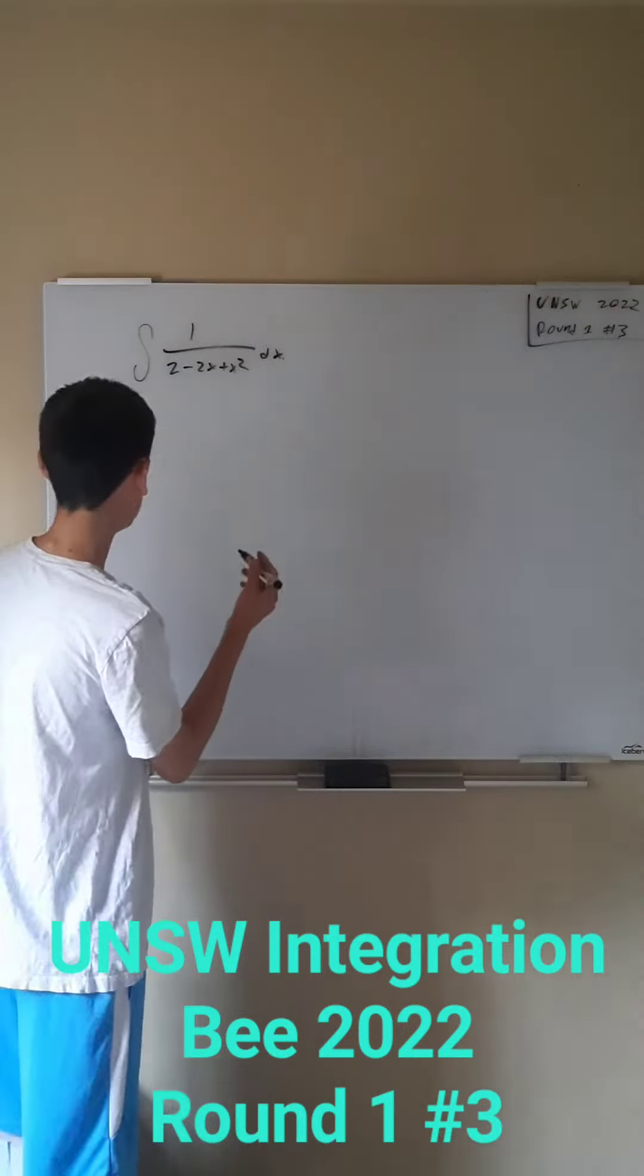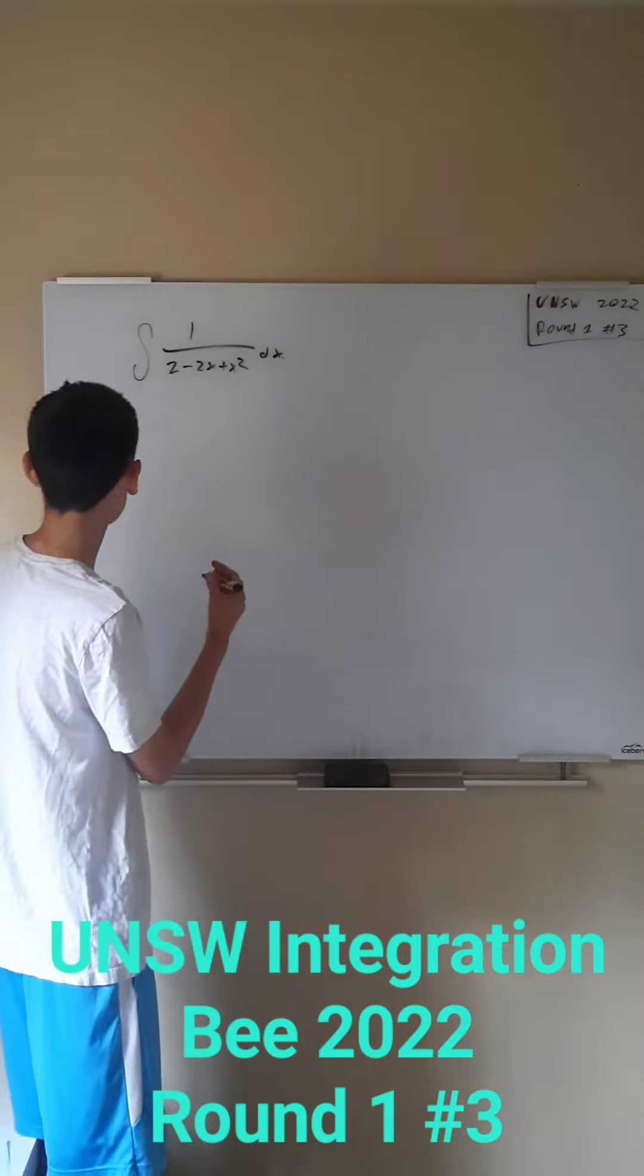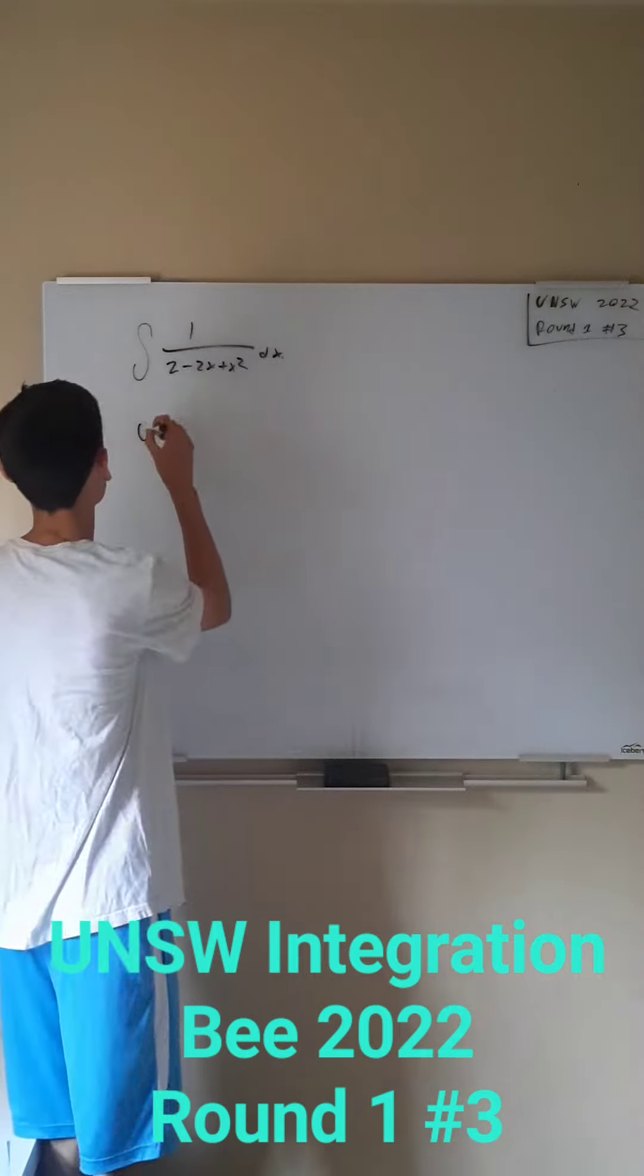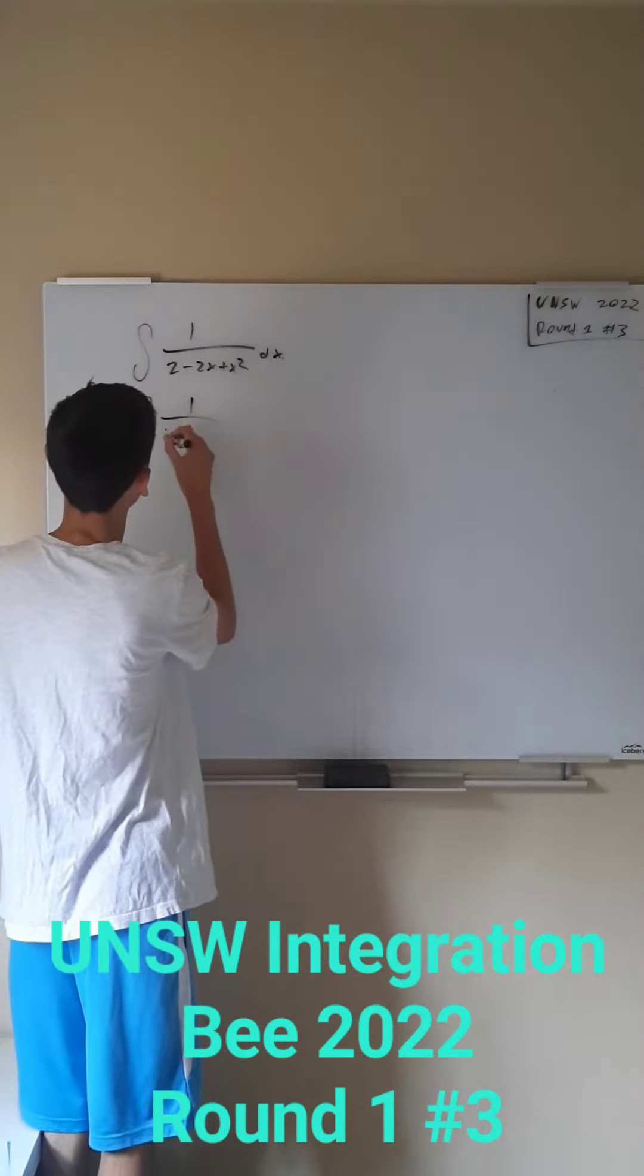Okay, so our integral here is 1 over 2 minus 2x plus x squared dx. I'm just going to rewrite this to be a little bit cleaner.